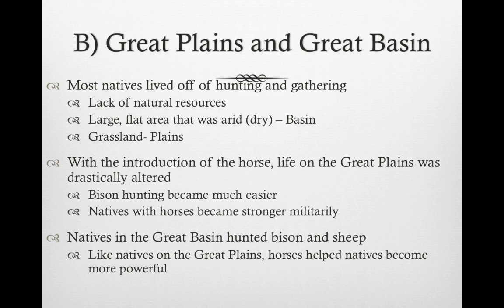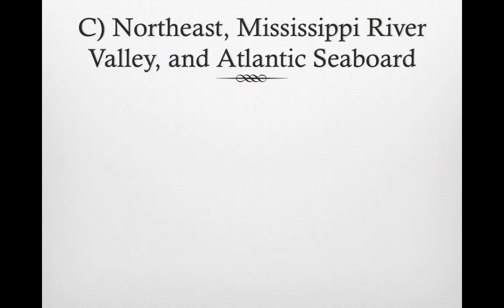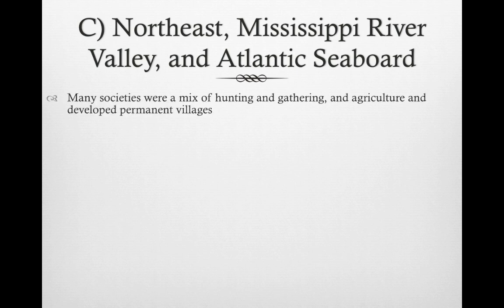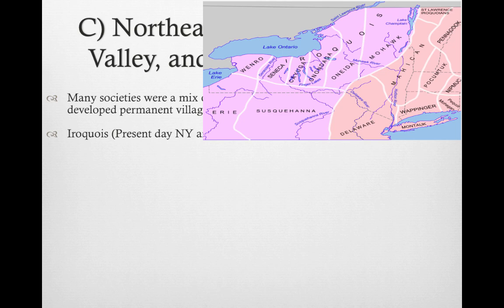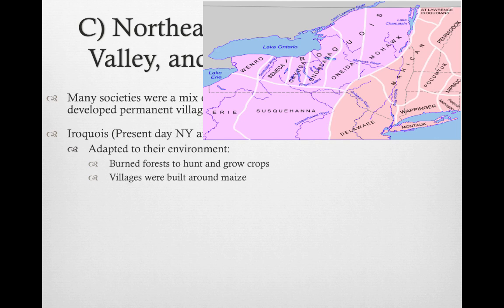Let's look at the northeast, Mississippi River Valley, and Atlantic seaboard. Many societies here were a mix of hunting, gathering, and agriculture, and they developed permanent villages. In present-day New York and Pennsylvania, we have the Iroquois nation. Like many Native Americans, they adapted to their environment by burning forests to hunt and grow crops, and villages were built around maize — again showing the importance of maize.